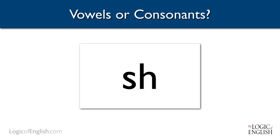How about SH? It's a consonant — we can't sing it, it's blocked by our tongue. How about OI? You might be surprised, but it's actually a vowel. We can sing it. And in a word like BOIL, this is the vowel.